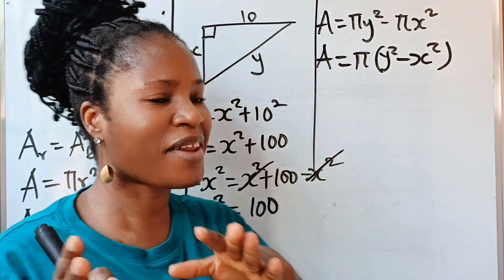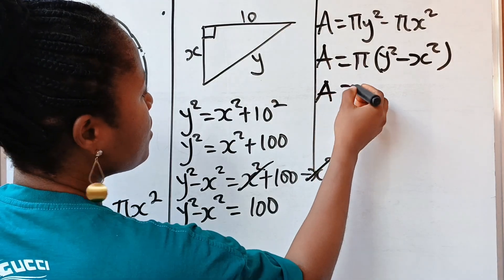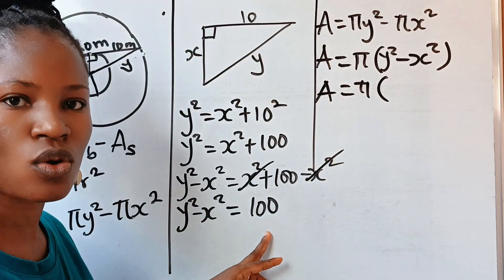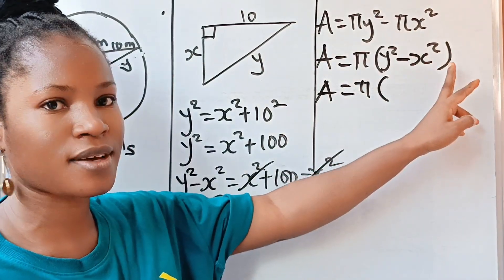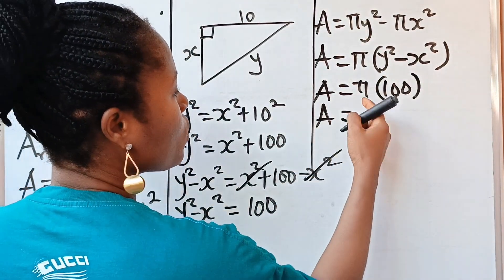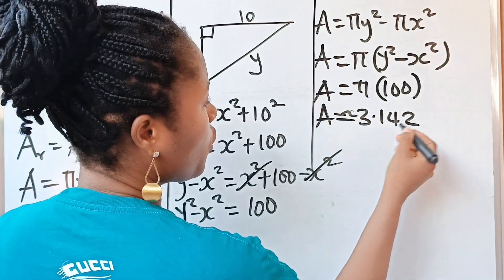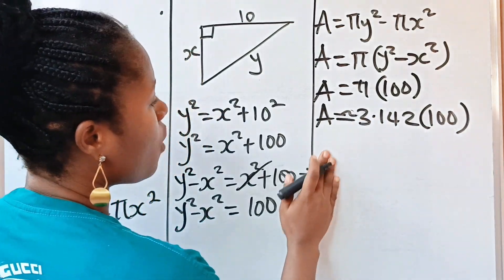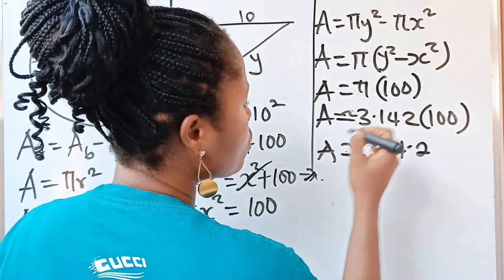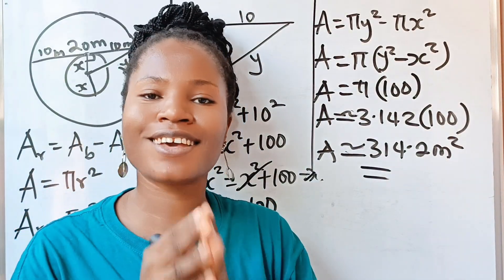Are you seeing anything? From earlier, we know that y squared minus x squared equals 100. So instead of writing y squared minus x squared, we replace it with 100. Our area is equal to π times 100, where π is approximately 3.142. So our area is approximately 314.2 square meters. As easy as that. Thank you so much for watching. See you in my next video.